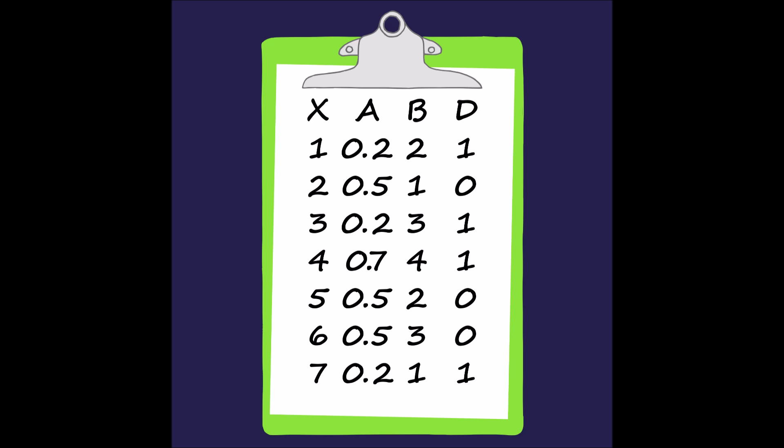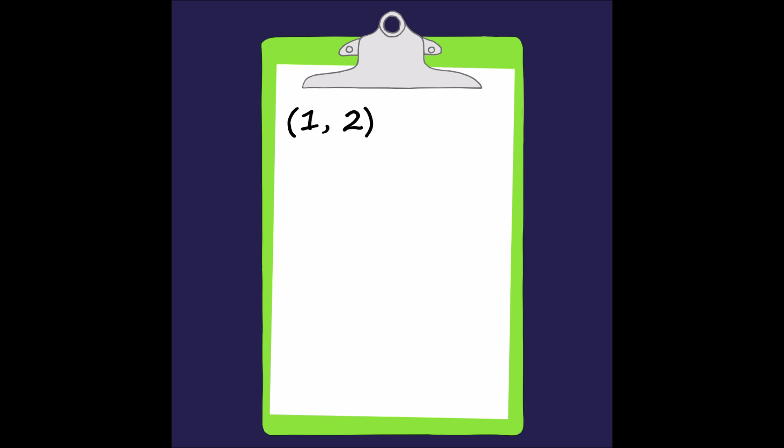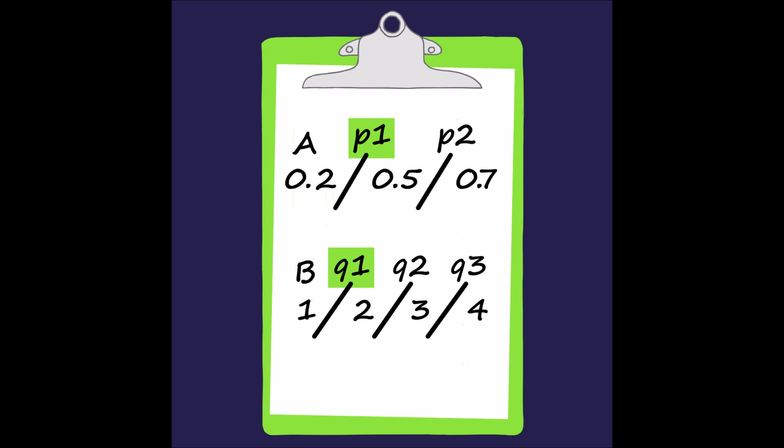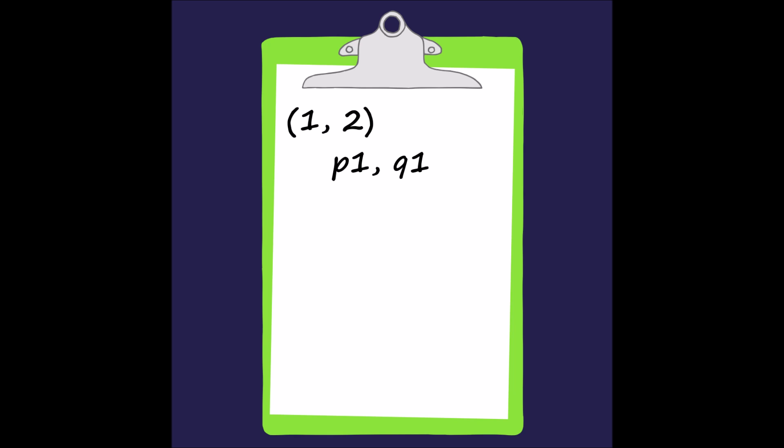The next step is to create our discernibility statements. We compare every tuple to every other tuple that has a different decision feature, and list the cut points needed to keep the two tuples distinct from one another. It is important that when choosing our cut points, we do not make two tuples indiscernible. Let's compare tuples 1 and 2 — they have a different decision feature and differ on attributes A and B. To keep them distinct, we need different values for 0.2 and 0.5, or different values for 1 and 2.